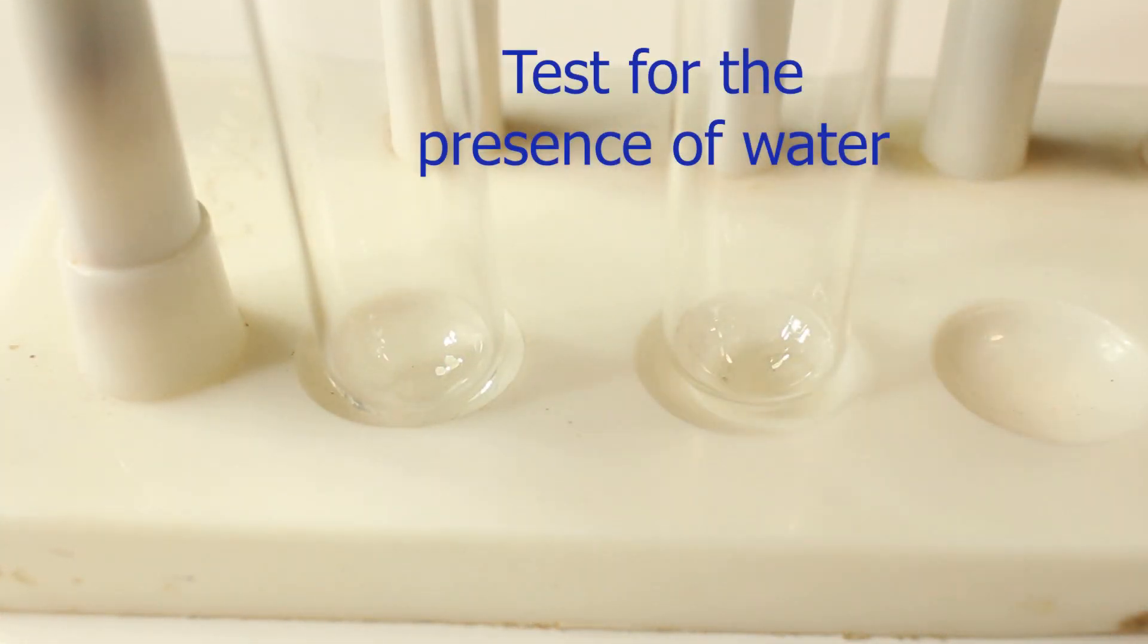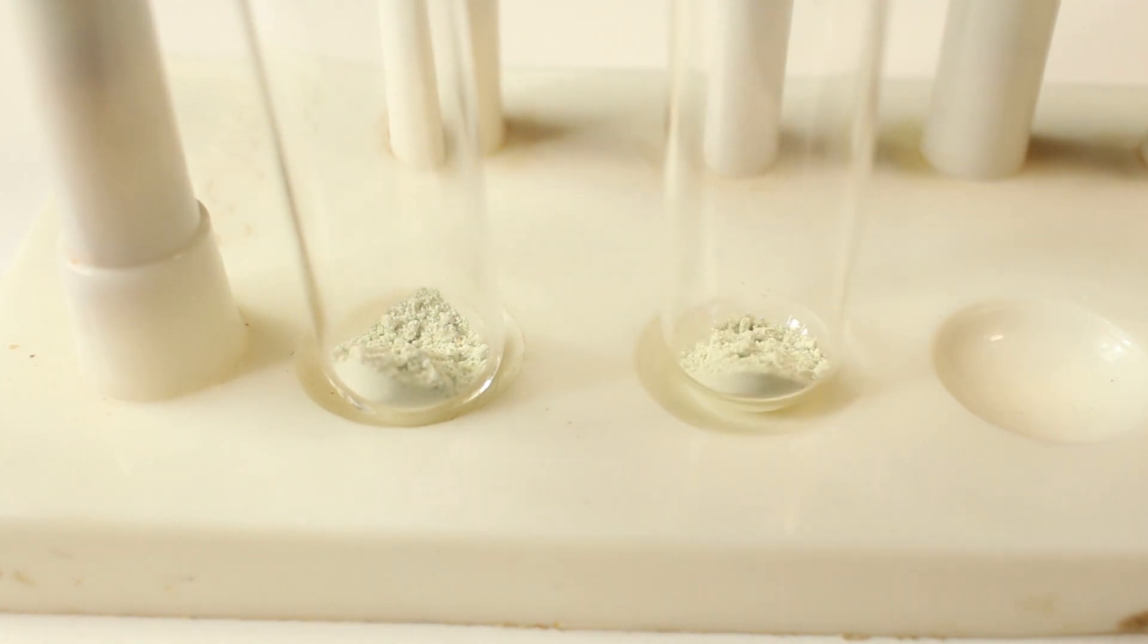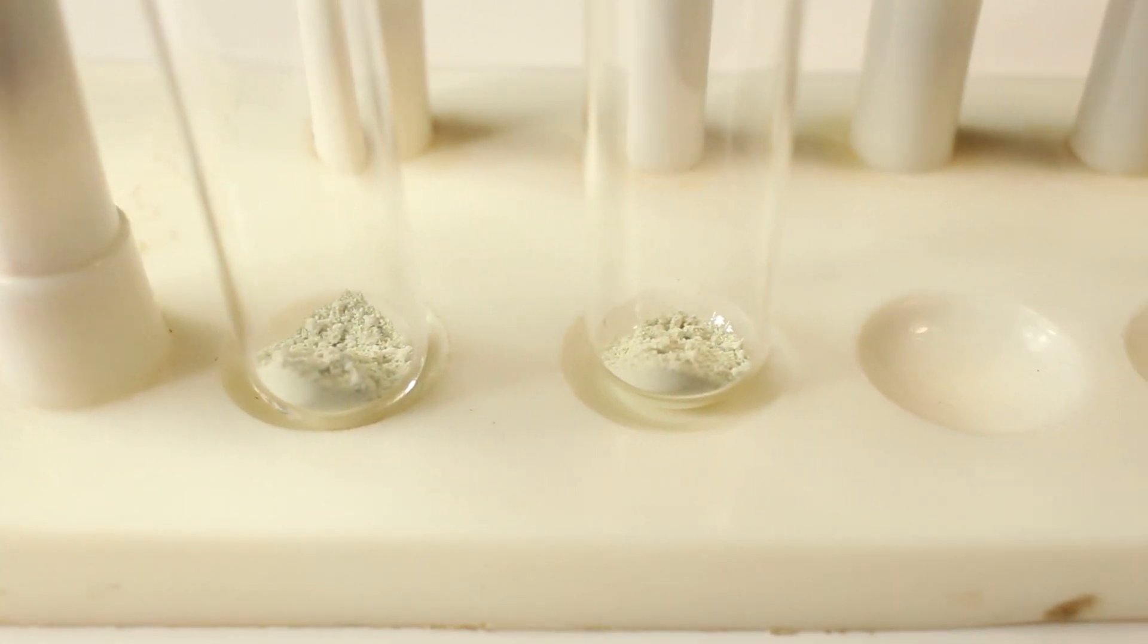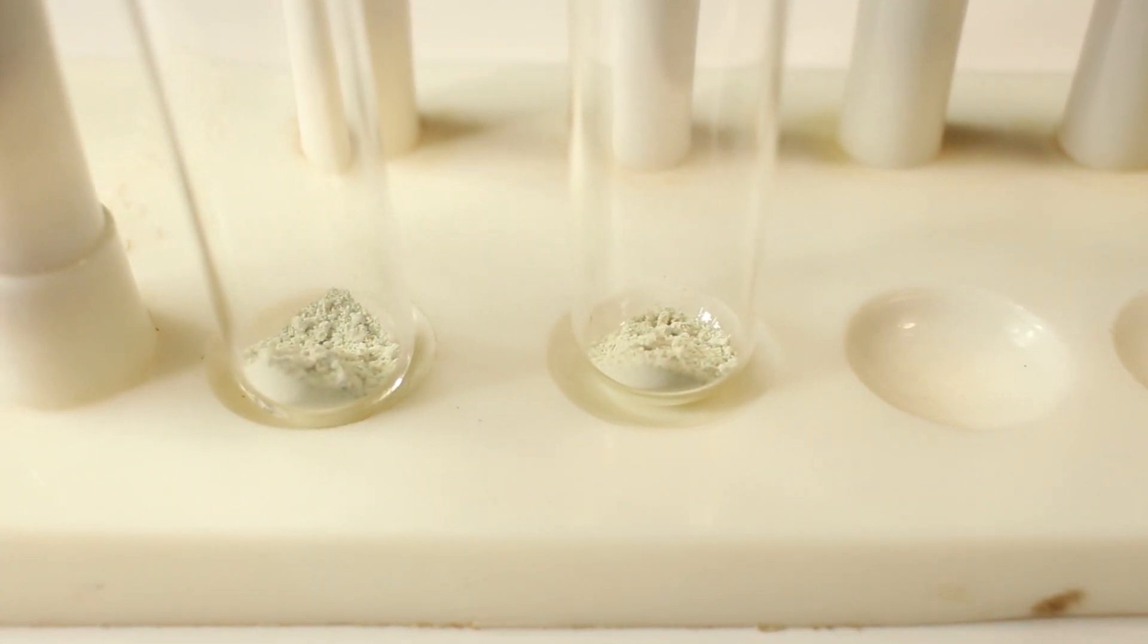Let's use this white powder as a test for water. The idea is that only water would return the light blue color back again. Let's use glycerol as a control - it also has OH groups as water, and like water it is a colorless liquid.